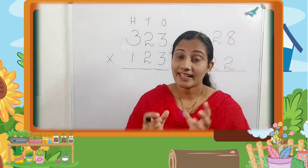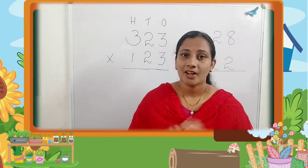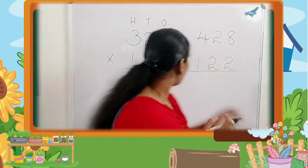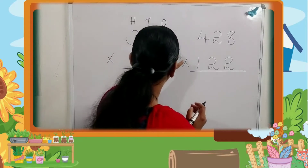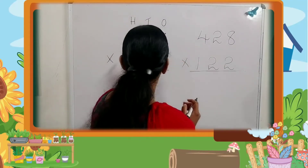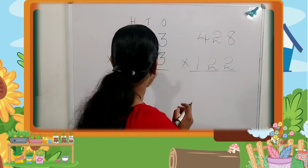There are a few examples. Here, 323 multiplied by 123.